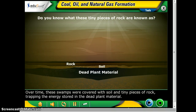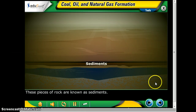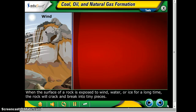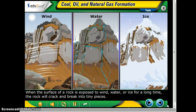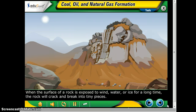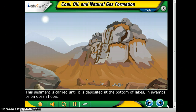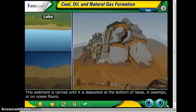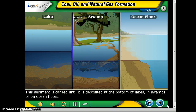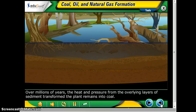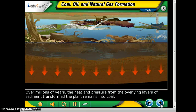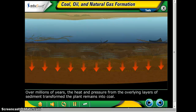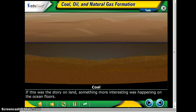Do you know what these tiny pieces of rock are called? They're called sediments. When the surface of a rock gets exposed to wind, water, or ice for a very long time, the rock cracks and breaks into pieces. The sediment is then carried until it's deposited at the bottom of lakes, swamps, or on the ocean floor. Over millions of years, the heat and pressure from the overlying layers of sediment transformed the plant remains into coal.